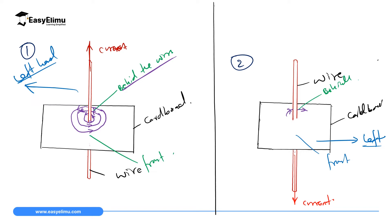This magnetic field must join each other to form a complete loop, so in front it will be moving in that direction. Drawing another field line: behind the wire is moving to the left hand side of the swimmer, then above it moves accordingly. Behind the wire moves to the left, and in front moves to the right hand side of the swimmer. When current is moving up we have an anticlockwise movement, but when current is moving down these field lines are moving in a clockwise direction — so they are opposite to each other.